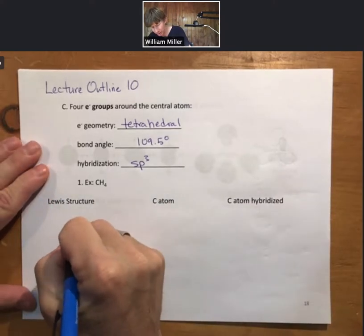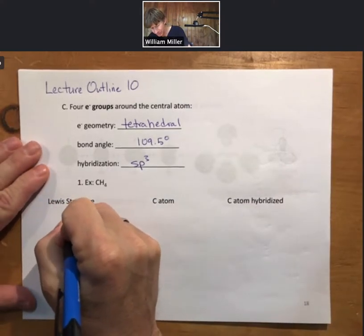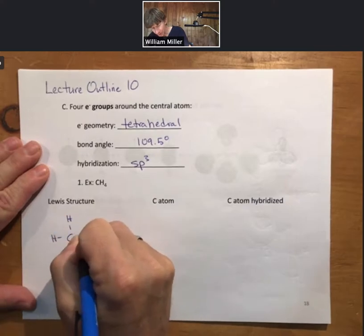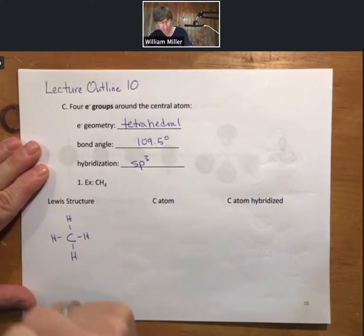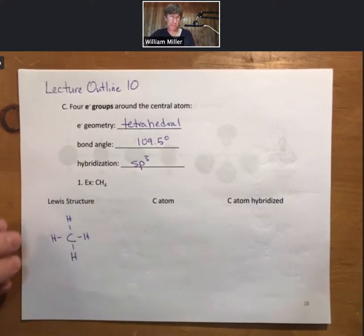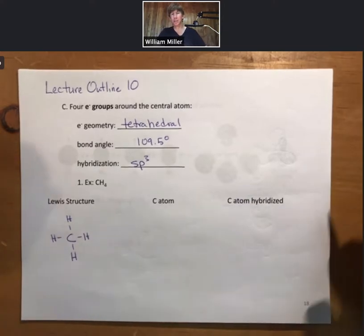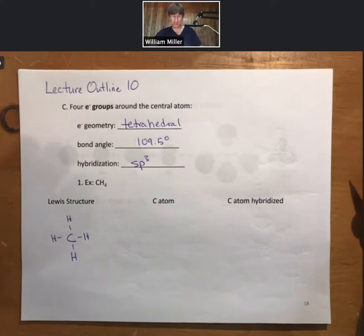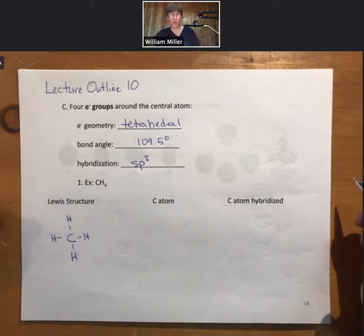We'll draw the Lewis structure first. Lewis structures do not have to show shape, though they can. What Lewis structures have to show is all of the bonds, all of the atoms, and all of the lone or non-bonding pairs of electrons — of which there are no lone pairs in CH4.